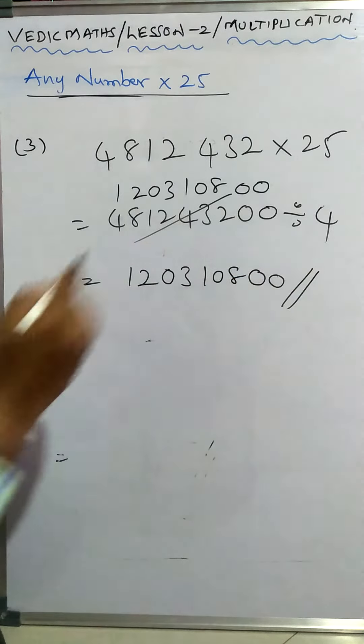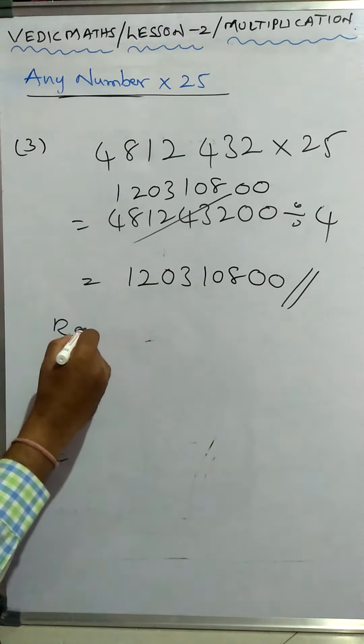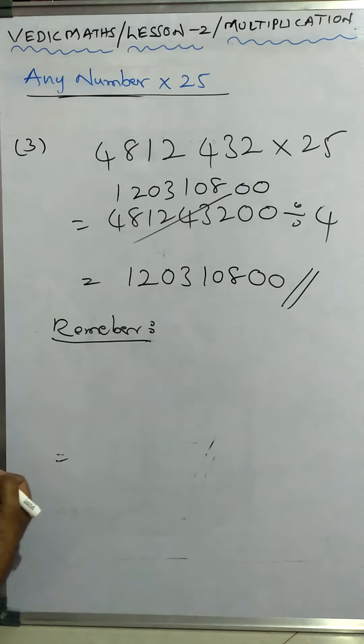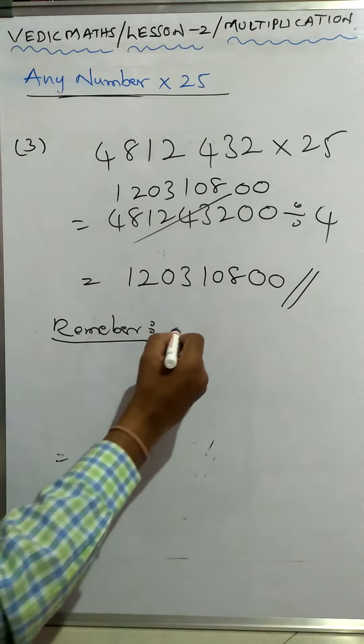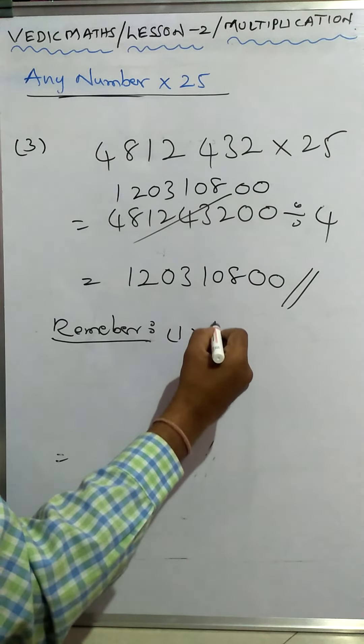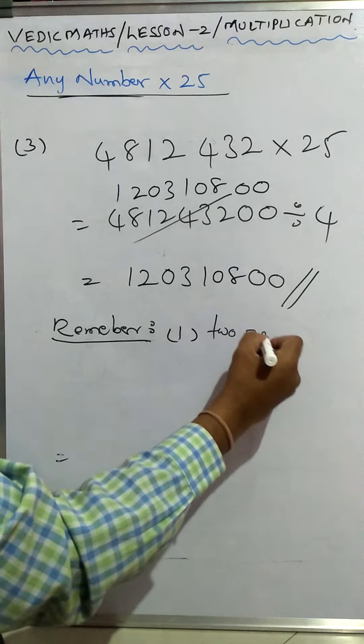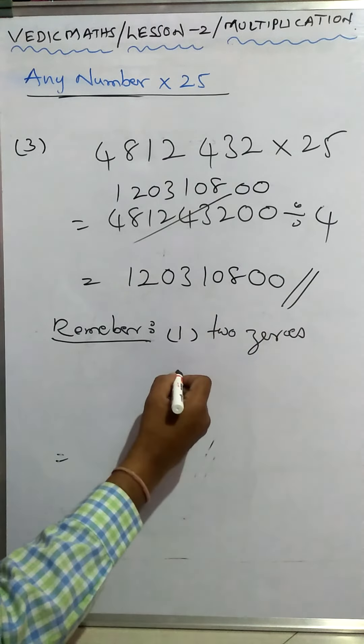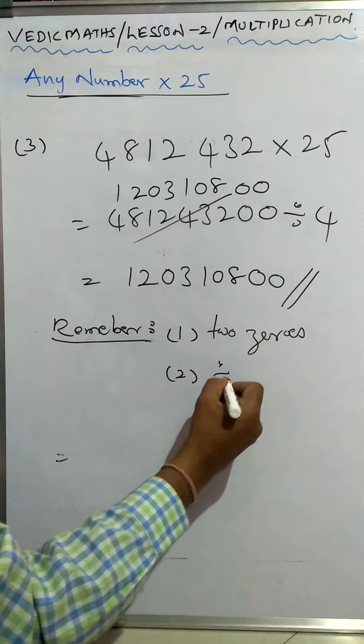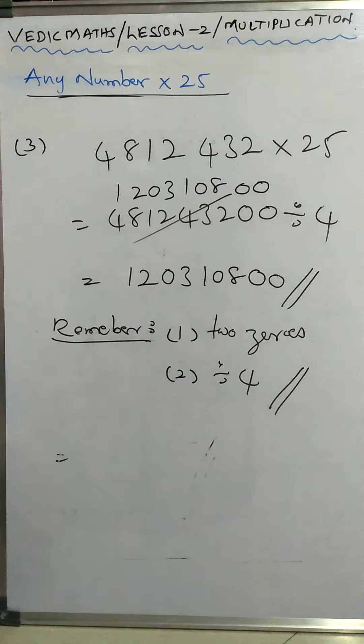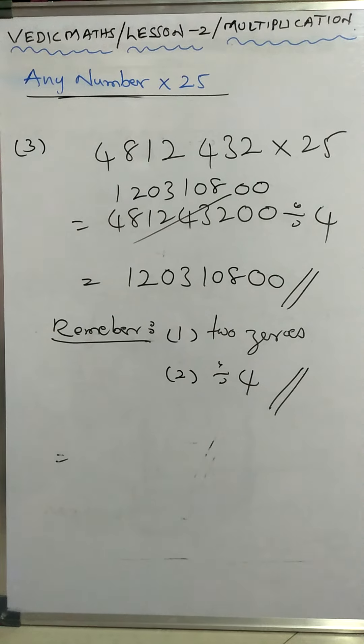So just remember what to remember here: when the number is multiplied with 25, first step is put two zeros, just two zeros. The second step is just divide by four and you will get the answer to the question.